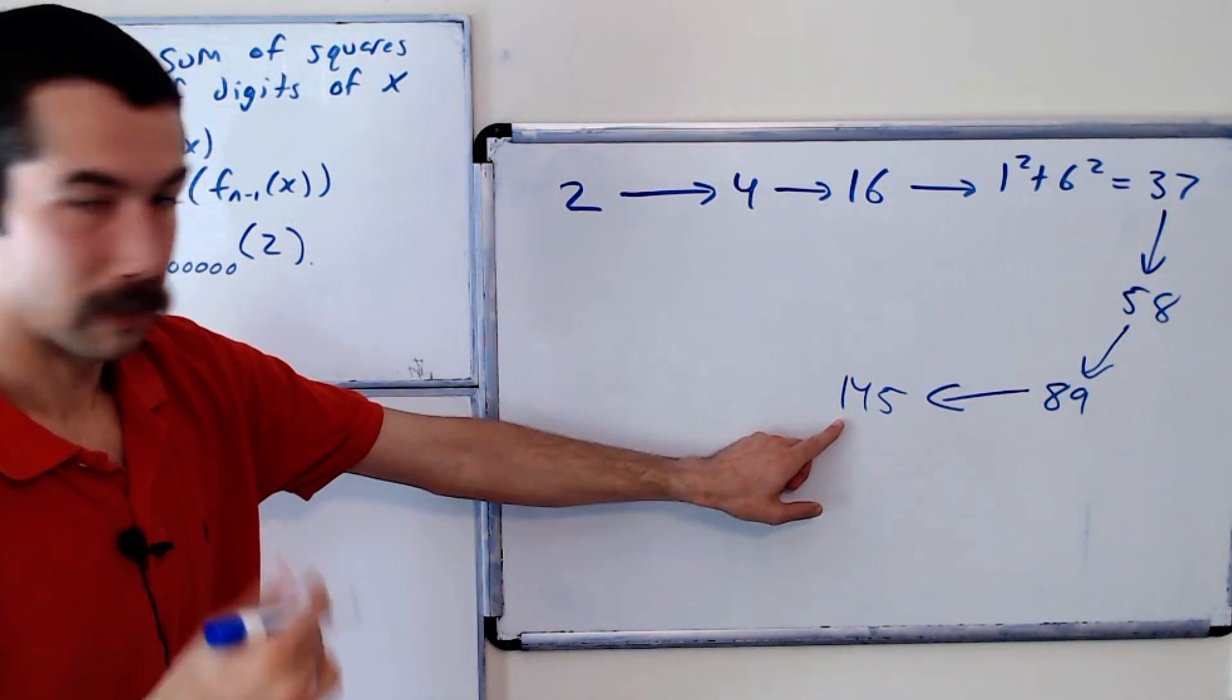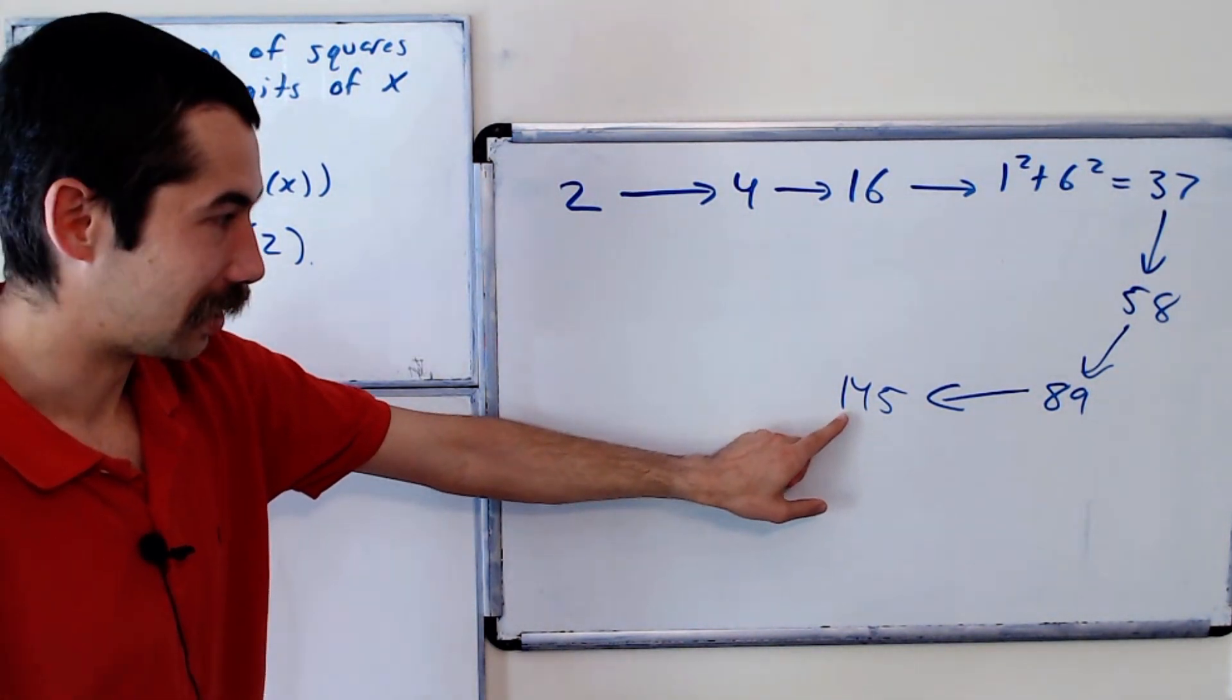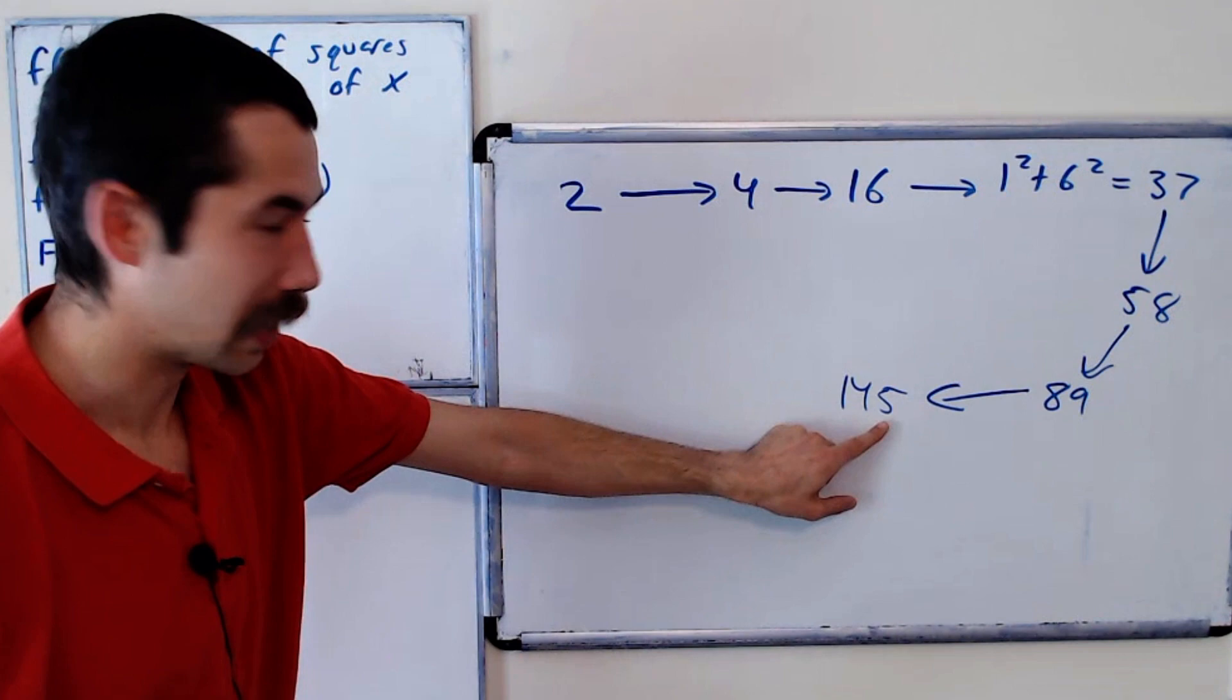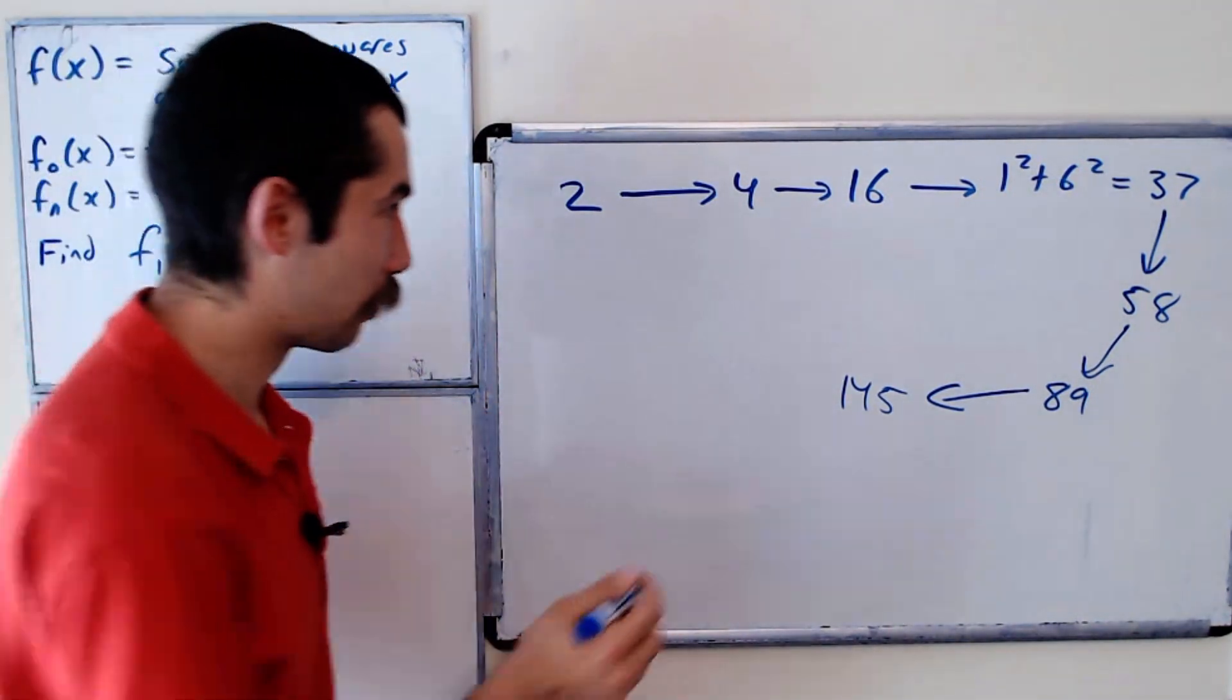Okay, we add the sum of all the digits, the squares of all the digits. So 1 plus 16 plus 25, that's 42.